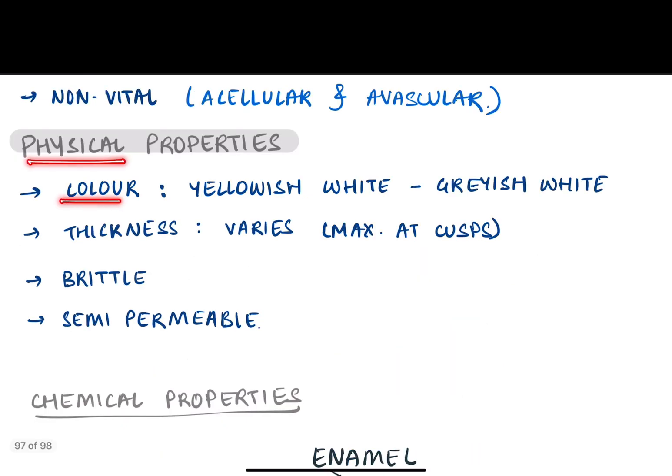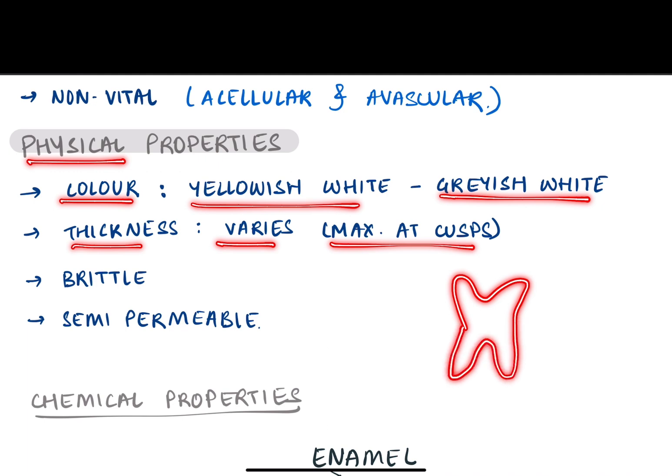Physical properties: The color is yellowish white to grayish white, and the thickness varies and is maximum at the cuspal region. For example, this is a molar. In the cuspal region, the thickness of enamel will be maximum.